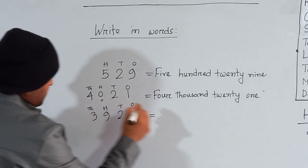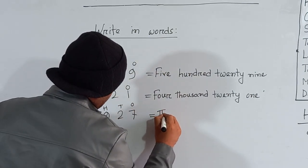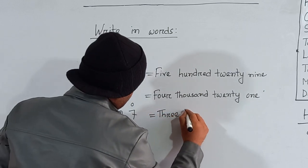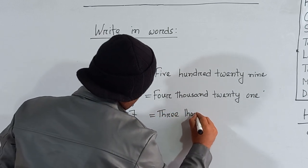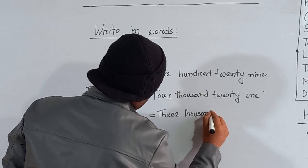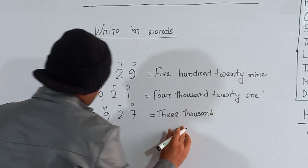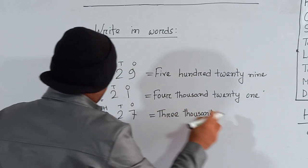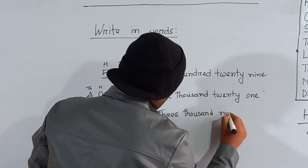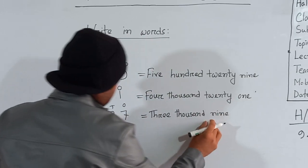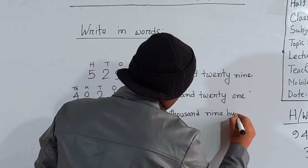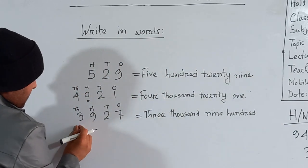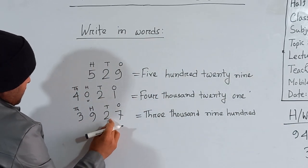Here is three thousand. So you can write here T-H-R-E-E three thousand T-H-O-U-S-A-N-D, three thousand. How many hundreds are here? Nine hundreds. So we can write here N-I-N-E nine hundred H-U-N-D-R-E-D — three thousand nine hundred.